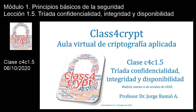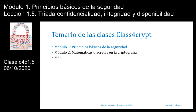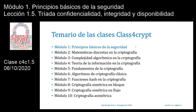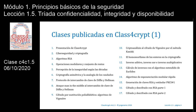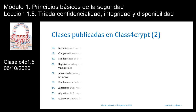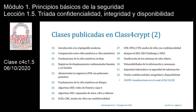Bienvenidos a Class4Crypt, tu aula virtual de criptografía aplicada. Clase número 1.5: Tríada, Confidencialidad, Integridad y Disponibilidad. Esta clase pertenece al módulo 1, dedicado a los principios básicos de la seguridad. Te muestro los títulos de las 32 lecciones que ya hemos publicado en este canal Class4Crypt, con más de 18.850 visualizaciones a fecha de hoy, martes 6 de octubre de 2020.